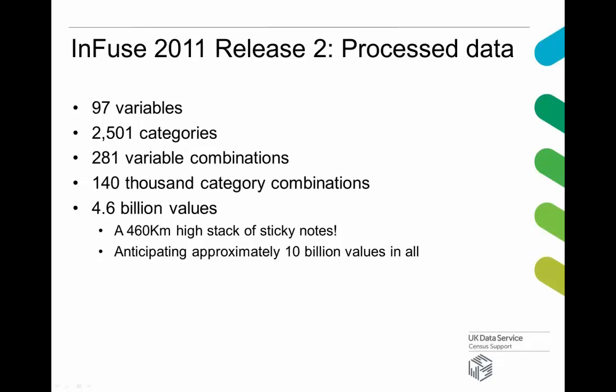From the original set of 11,000 different files, we rationalised those down to find there were 97 variables, and those variables contained about two and a half thousand categories between them. The variables were found in about 280 different combinations, and within those variable combinations there are about 140,000 different category combinations. The important thing is that we had a model in which we could see all of these things and describe them at once.